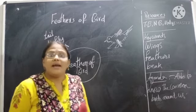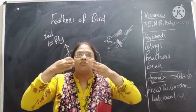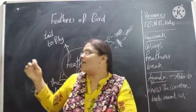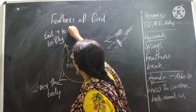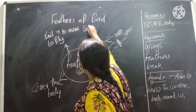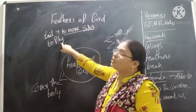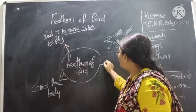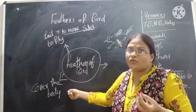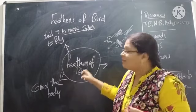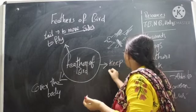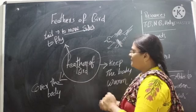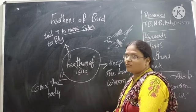Mainly the tail helps the bird to move in a direction when it is flying straight in the sky. The tail helps to move to the right side and to the left side. Mainly the tail helps to move sides — it shows the direction, which direction to move. Small, small feathers cover the entire body of the bird. The feathers keep the body warm.